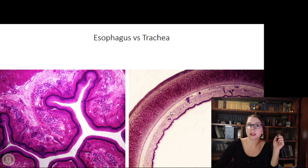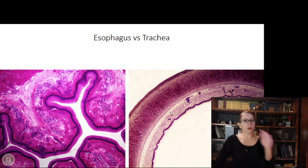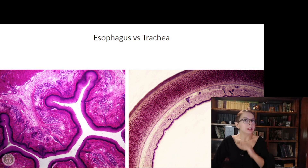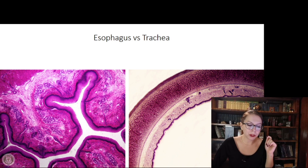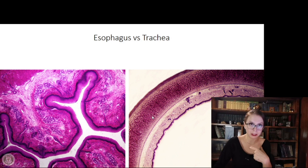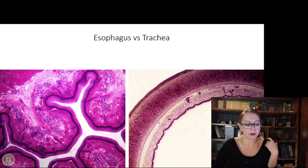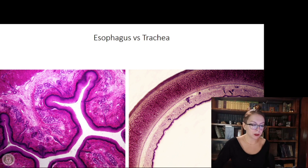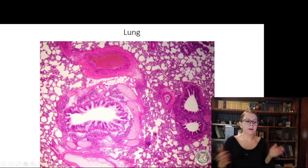In the trachea, the epithelium is pseudostratified ciliated. After that we have the lamina propria and submucosa — they are not separated by a muscularis mucosae, which is absent. Then cartilage is present, which is C-shaped because the esophagus is located behind the trachea, so it should not collapse. This cartilage is surrounded by the perichondrium. All envelopes are very well distinguishable, including the adventitia.